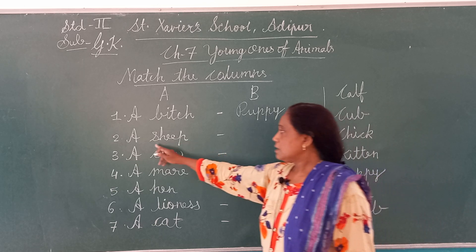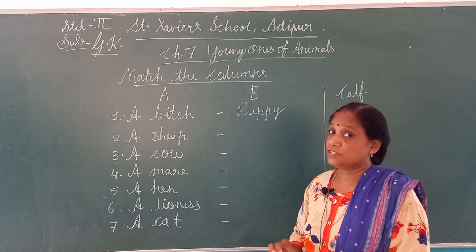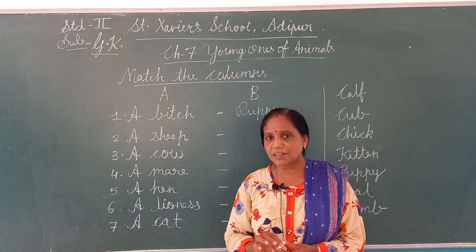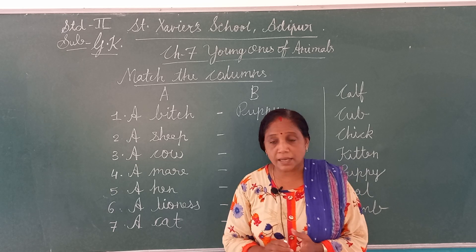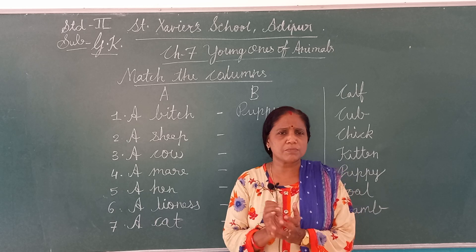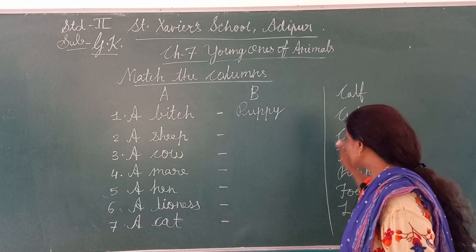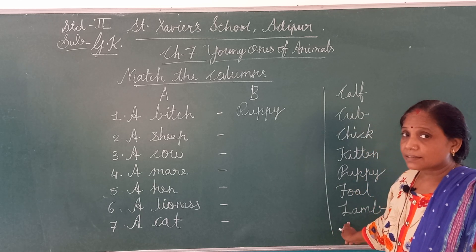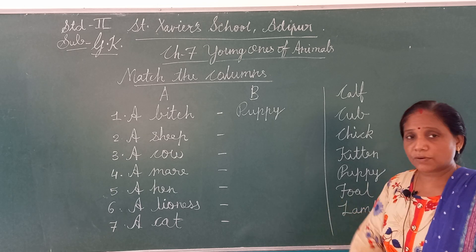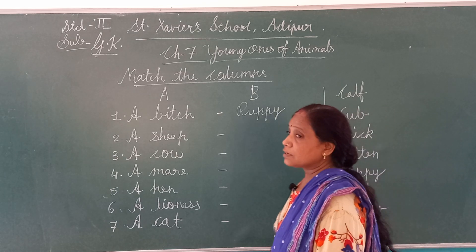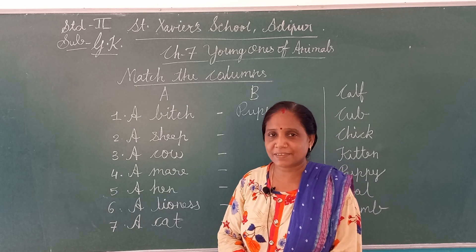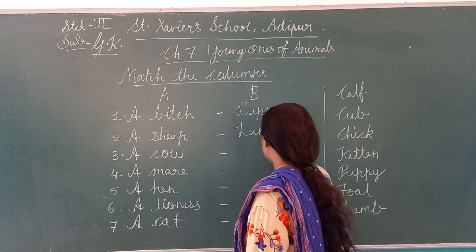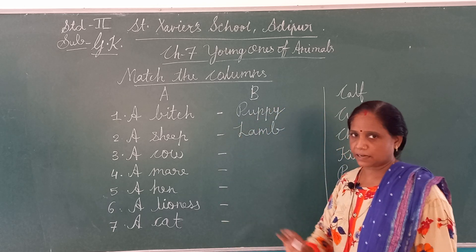अभी next — A, Sheep. शीप के बच्चे को क्या बोलेंगे? शीप वुल देती है ना, जिससे sweater बनता है। तो उसका जो young one होता है, उसको क्या बोलेंगे? Lamb! शीप के बच्चे को Lamb बोलेंगे। आपने वो poem सुनी होगी — 'Mary Had a Little Lamb'? तो यहाँ लिखेंगे: L-A-M-B. Second one completed.